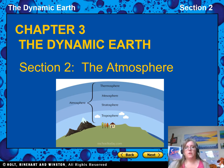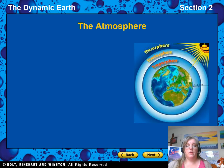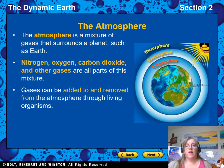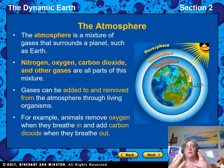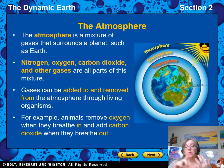We're ready to do section two of chapter three. The atmosphere is a mixture of gases that surrounds a planet like Earth. They call it an envelope of gases — nitrogen, oxygen, and carbon dioxide are the main components, with a whole bunch of several other small ones.